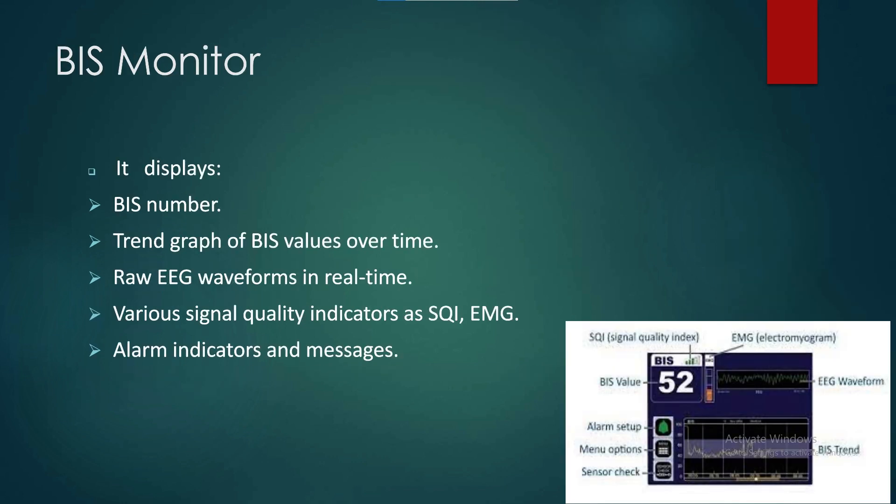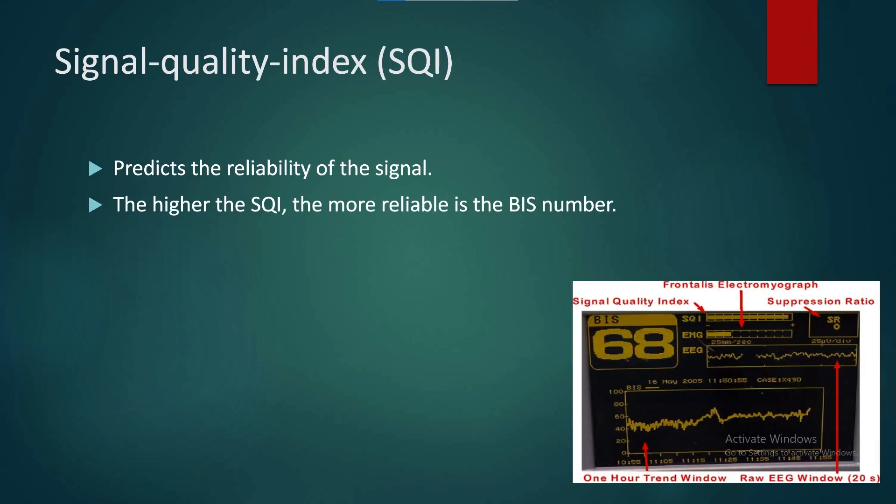The BIS Monitor displays the BIS number, a trend graph of BIS values over time, raw EEG waveforms in real time, and various signal quality indicators such as SQI, EMG, alarm indicators, and messages. The Signal Quality Index, or SQI, predicts the reliability of the signal — the higher the SQI, the more reliable the BIS number.